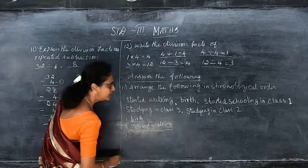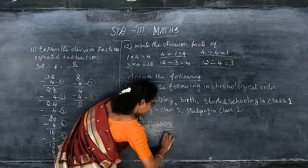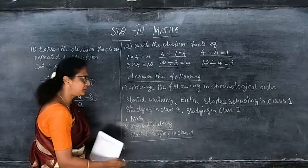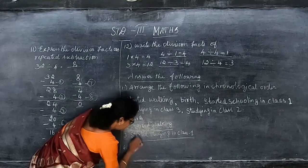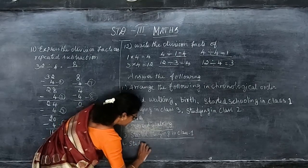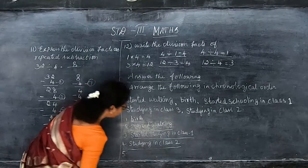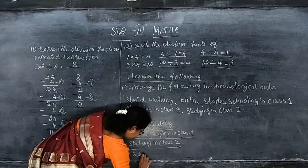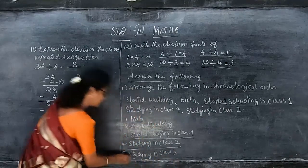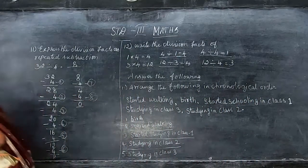Third is started studying in class 1. Fourth is studying in class 2, and fifth is studying in class 3. So you get them one by one in order. That is the way to write the answer for this question.